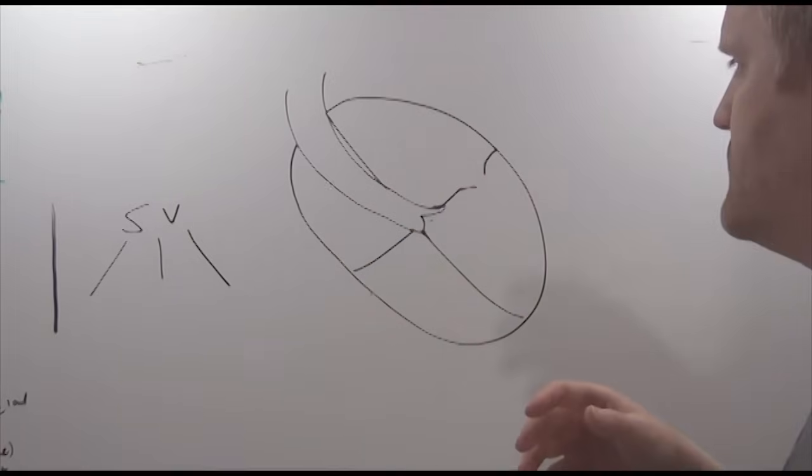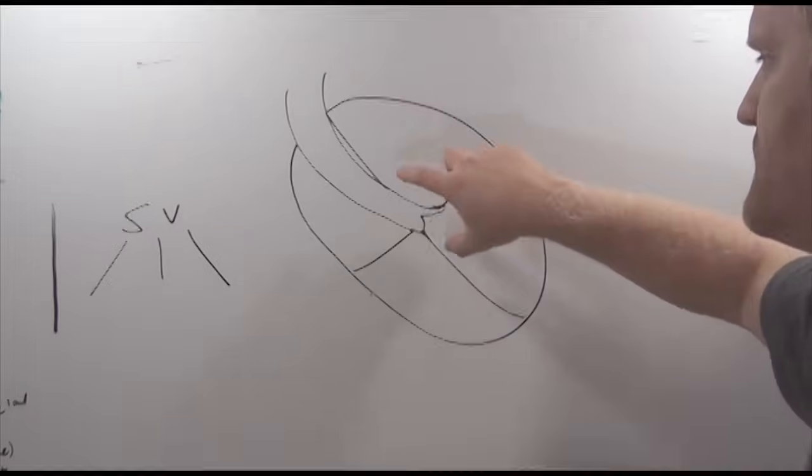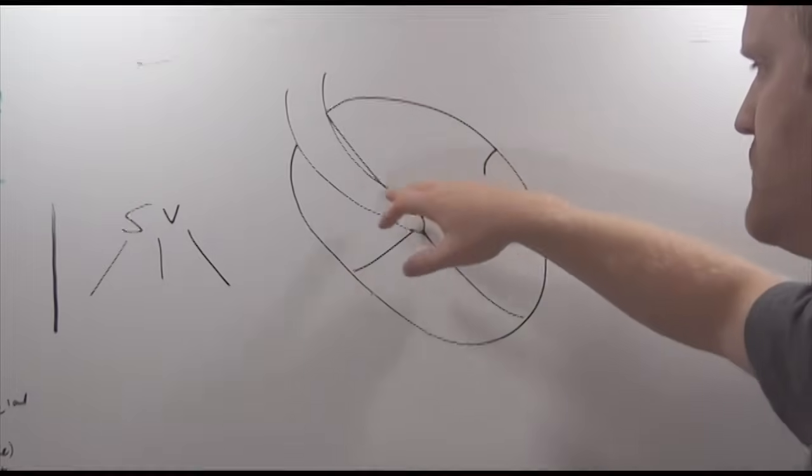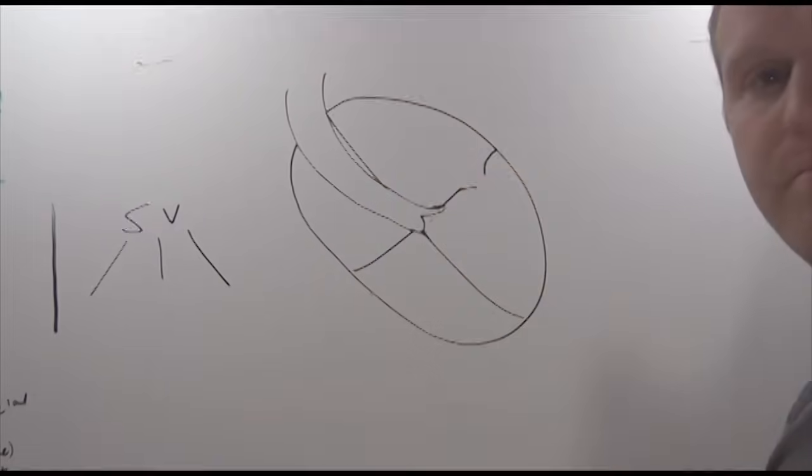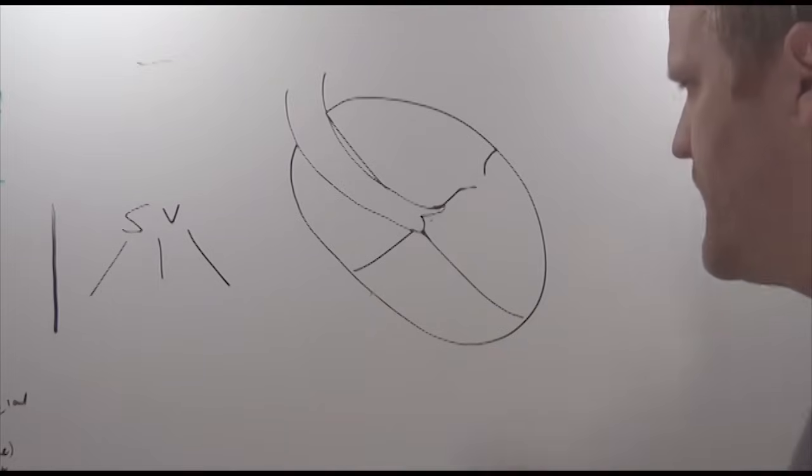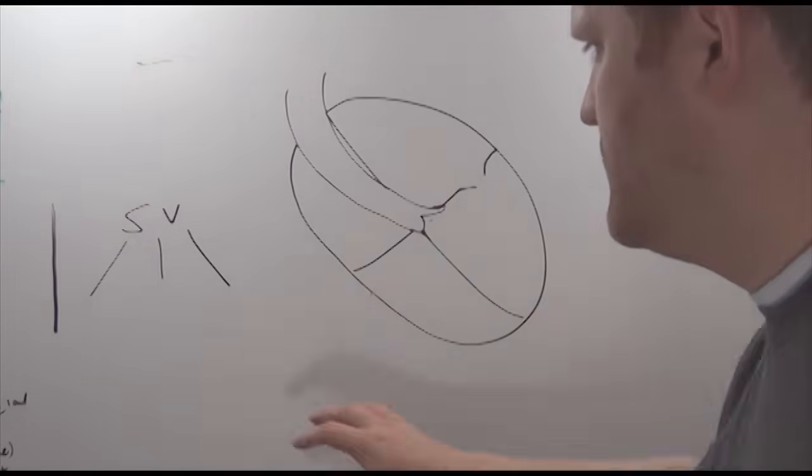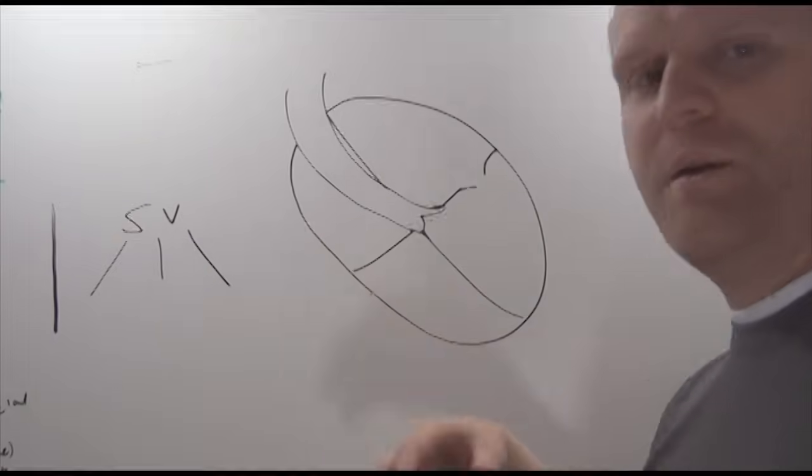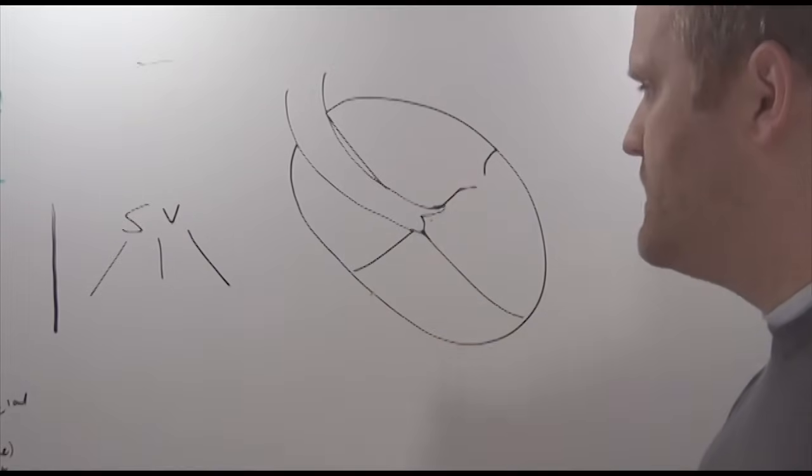So primarily to talk about preload and afterload, we're going to talk about the left side of the heart: left atria, left ventricle, aorta, and mitral valve. Before we do that, we need to understand where preload and afterload come into the game.